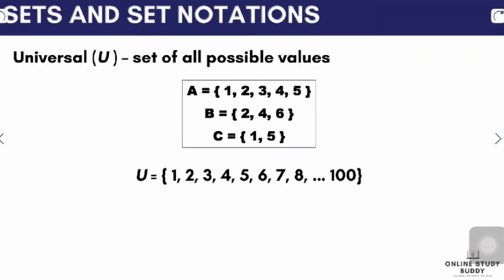For universal sets, a universal set is defined as the set of all possible values. For our previous items, we've been using sets A, B, and C. We can say that these three sets are part of a universal set of counting numbers from 1 to 100. It is like the largest group that contains all the sets we specified. The symbol used for the universal set is a capital italicized U — don't confuse this with the symbol used for union.